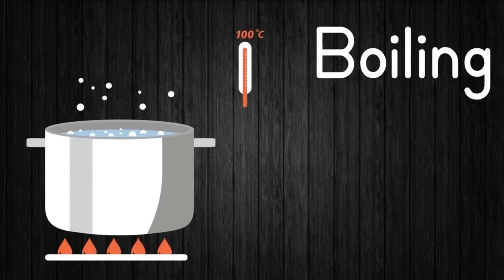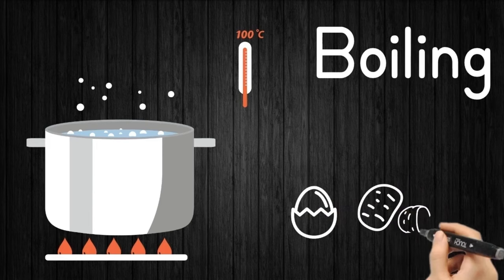Boiling is a wet cooking method where ingredients are cooked in water at 100 degrees Celsius. The most common recipes for boiling are boiled egg and boiled potatoes.